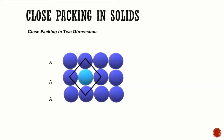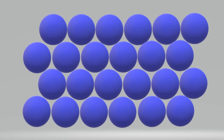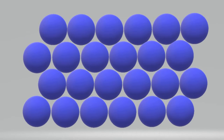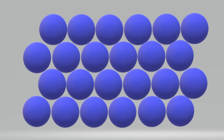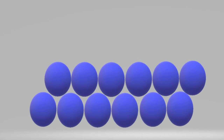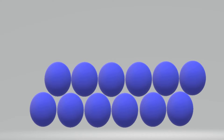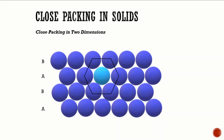The second row can also be placed above the first in a staggered manner such that its spheres fit in the depressions of the first row. If the first row is called A-type, the second row is different and may be called B-type. When the third row is placed adjacent to the second in a staggered manner, its spheres are aligned with those of the first layer, making it A-type again. The fourth row aligns with the second row, giving an ABAB-type arrangement. In this arrangement there is less free space.